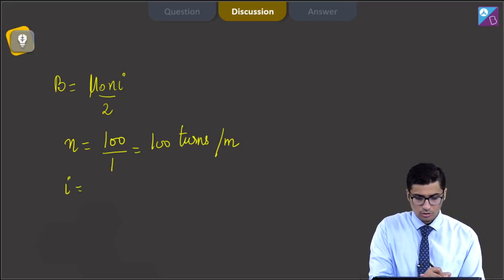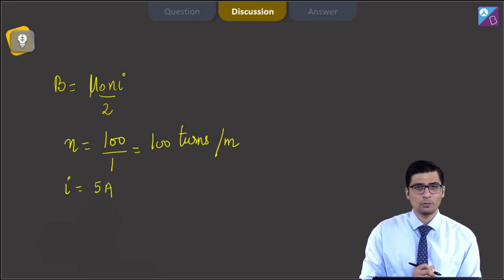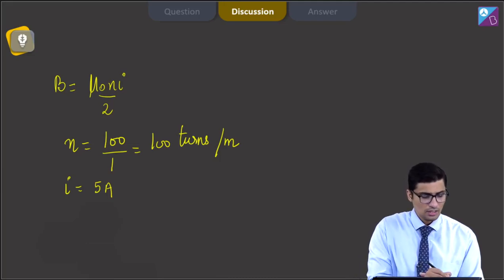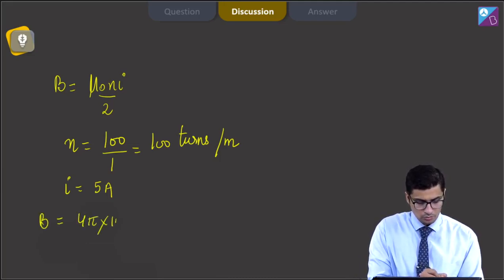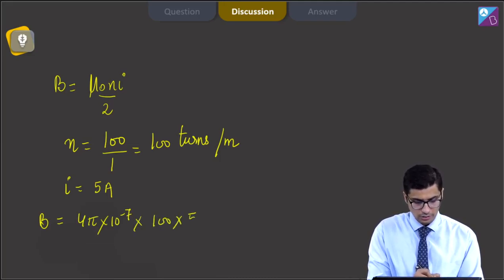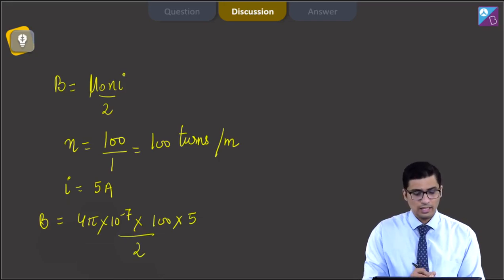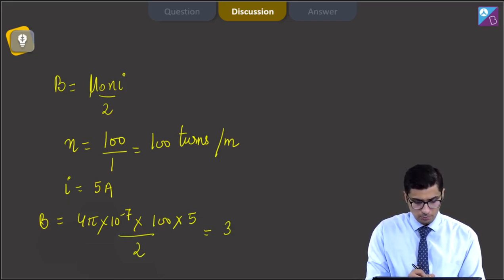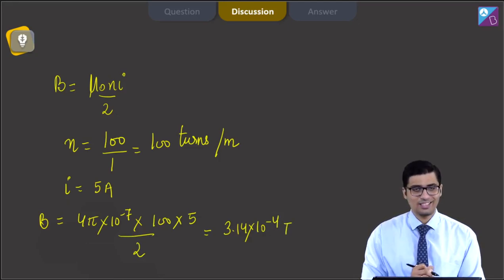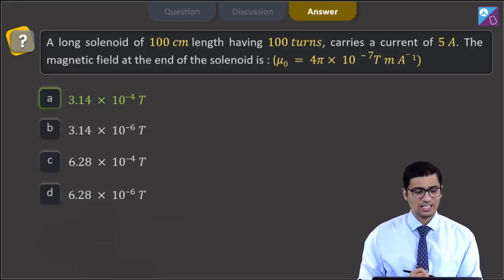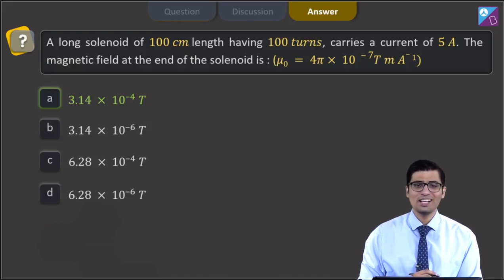The current i is equal to 5 ampere, and mu0 equals 4 pi into 10 to power minus 7 is also given. Substituting the values, B will be equal to 4 pi into 10 raised to power minus 7 into 100 into 5 by 2, which equals 3.14 into 10 raised to power minus 4 tesla. Therefore, the correct answer is option A: 3.14 into 10 raised to power minus 4 tesla.